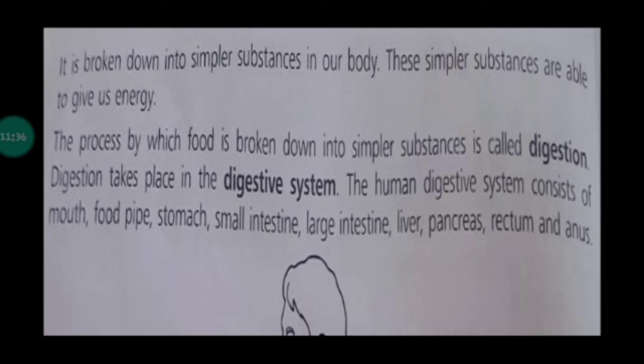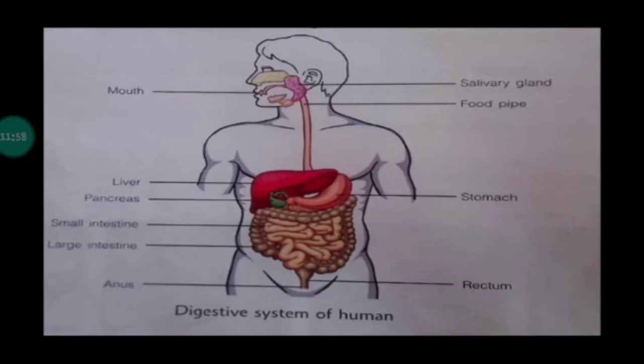Digestion takes place in the digestive system. The human digestive system consists of the mouth, food pipe, stomach, small intestine, large intestine, liver, pancreas, rectum and anus. Food enters first through the mouth.